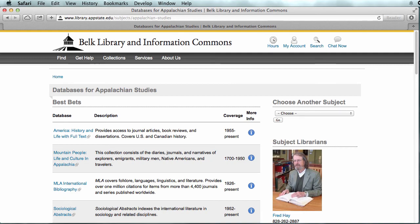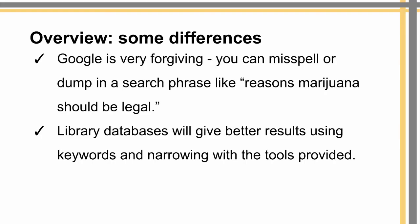Or if you're writing about the history of Appalachia, you would use the Appalachian Studies databases — these would be appropriate. As an overview: Google is very forgiving. You can misspell or just dump in a search phrase like 'reasons marijuana should be legal' and you'll get results, but you'll get better results if you learn to use some of the advanced search tools. Library databases give better results using keywords and narrowing with the tools provided, including subject headings.